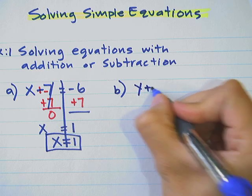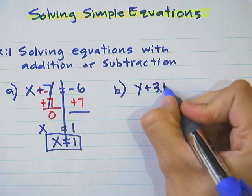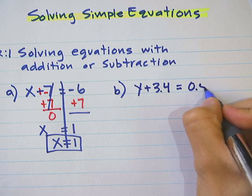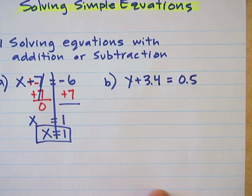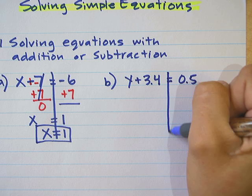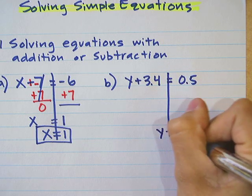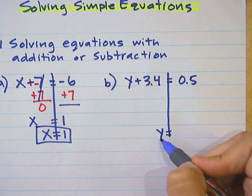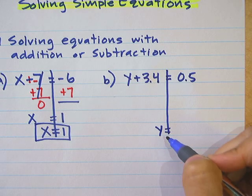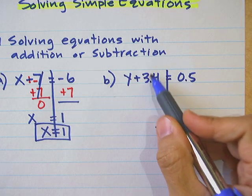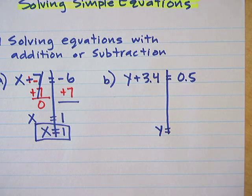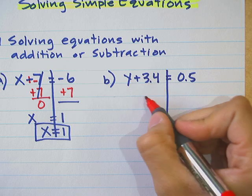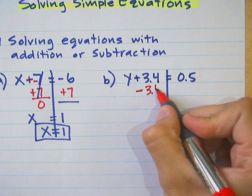The next one: y plus 3.4 equals 0.5. We're solving this, which means we're trying to find the value of y. I notice that y no longer has a 3.4, which tells me I need to eliminate that. So the 3.4 must go — it's being added to y, so I'm going to subtract 3.4.